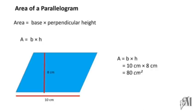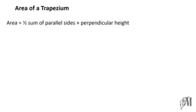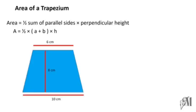Moving on to the next type of plane figures, that is the trapezium. A trapezium is something like a skirt in simple words. The area of a trapezium is equal to half into the sum of the parallel sides into the perpendicular height, where a and b refer to the lengths of the parallel sides. Take this trapezium — the perpendicular height is clearly 8 centimeters, and the sides of length 6 centimeters and 10 centimeters are parallel to one another.